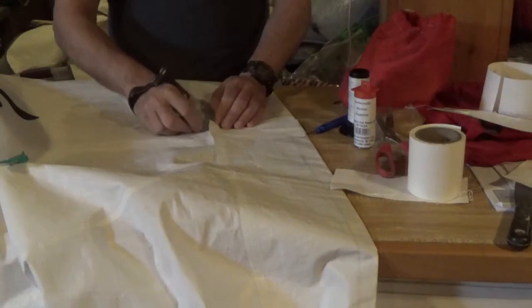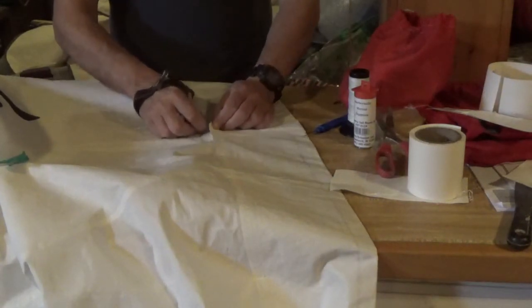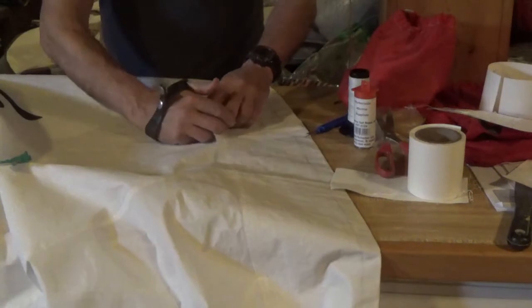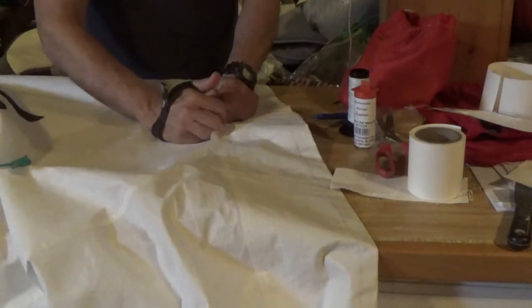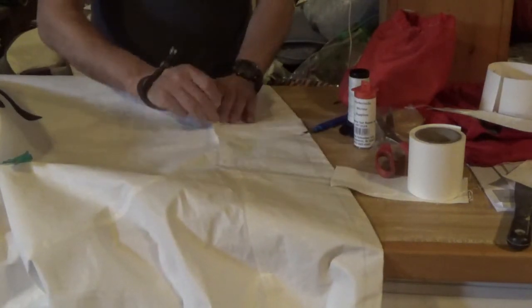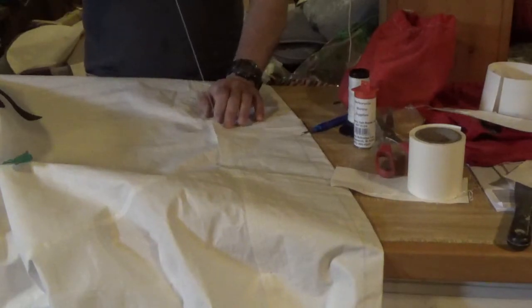Now, we're going to use a baseball stitch to trap the edges of the reinforcements on the inside and the outside of the luff sleeve. Be careful not to sew the luff sleeve closed.